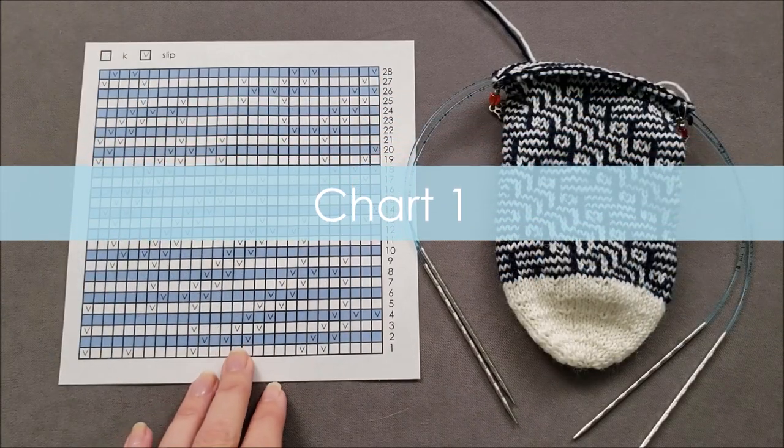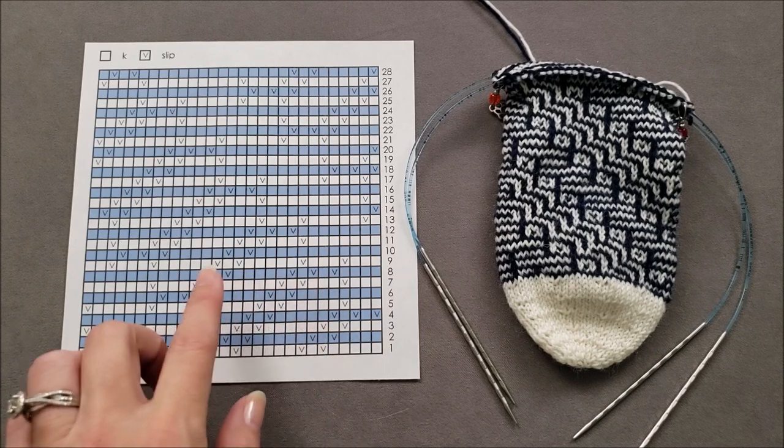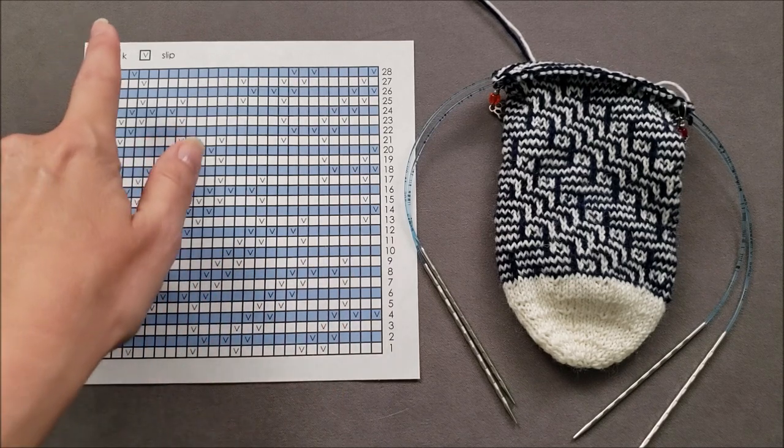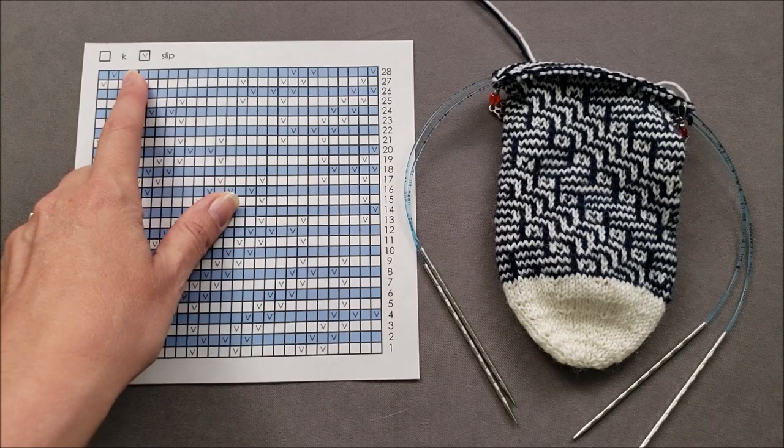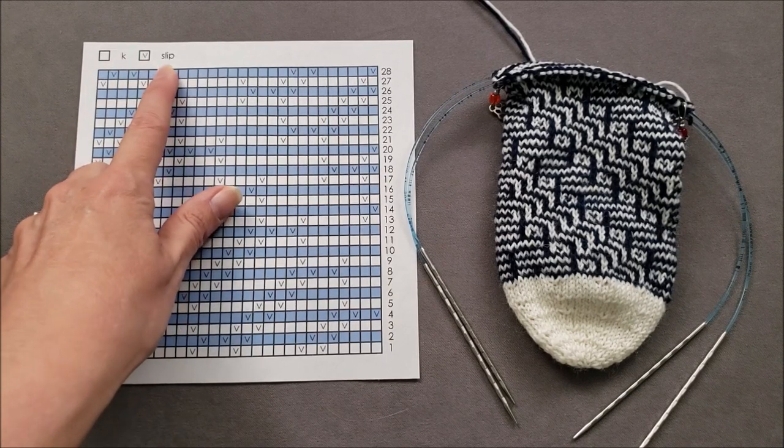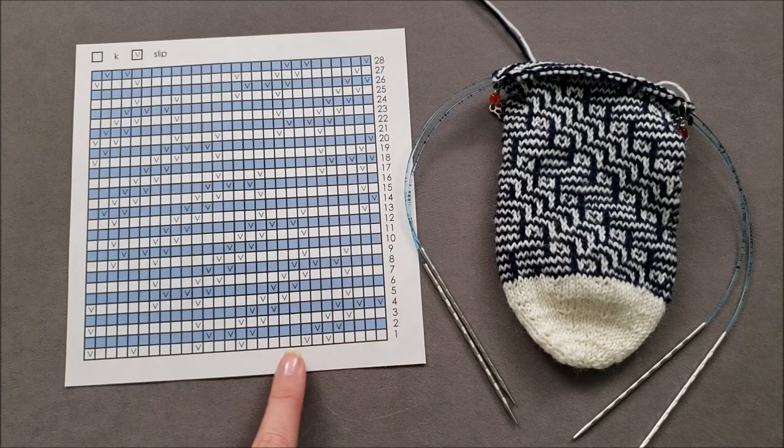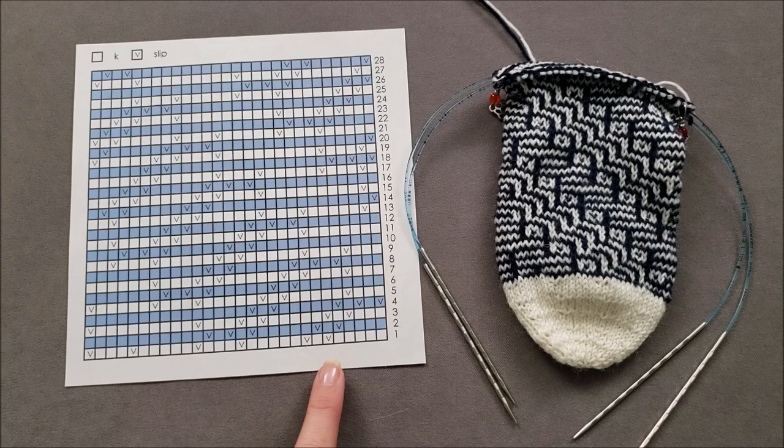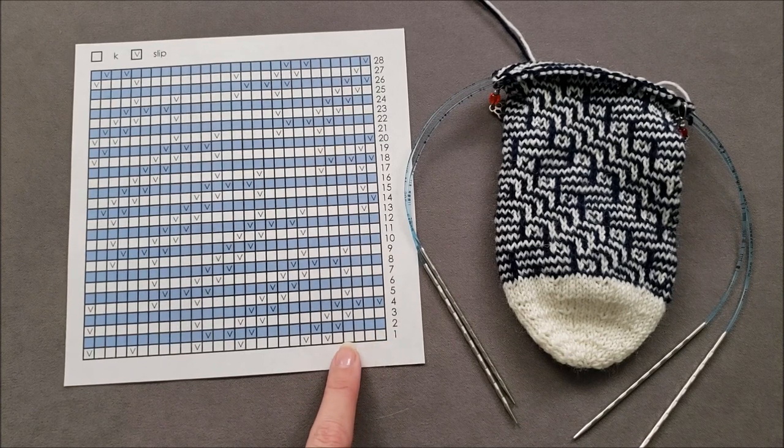In the first chart, you can easily see that each round is going to be worked in a different color. Based on the stitch key, the knitter would know that every stitch in the chart would either be knit or slipped. Since all of the stitches in round one are white, you would know to work with the white yarn.